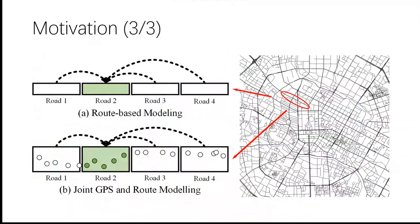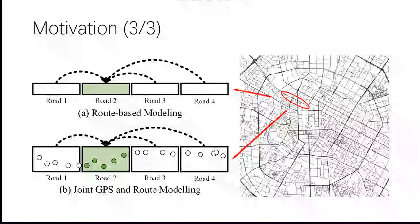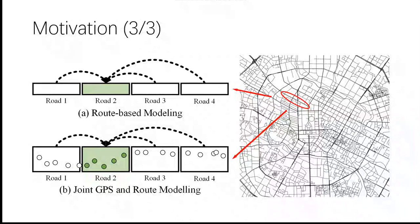We consider GPS trajectory and route trajectory as the two modals of a single movement observation and fuse information through intermodal information interaction. In contrast to previous route-based methods, our approach introduces GPS trajectories to model the dynamics of road segments and uses the two types of trajectories to refine each other.